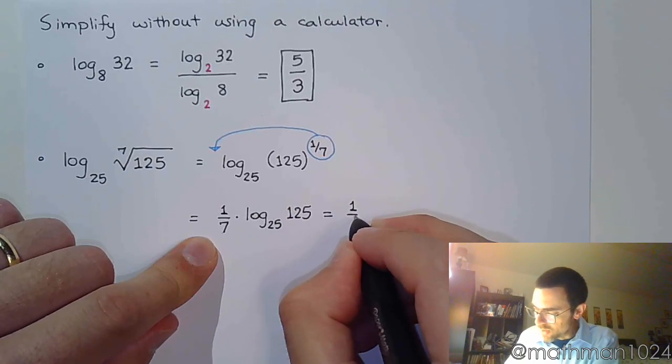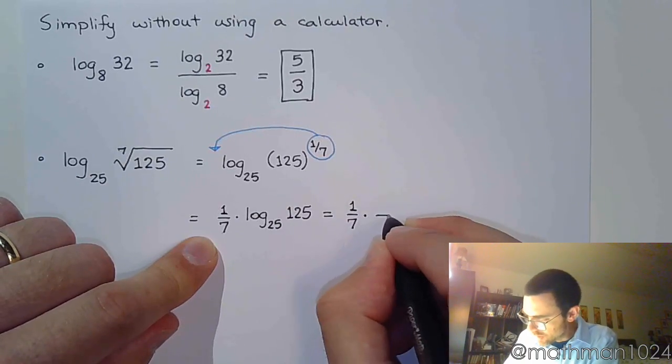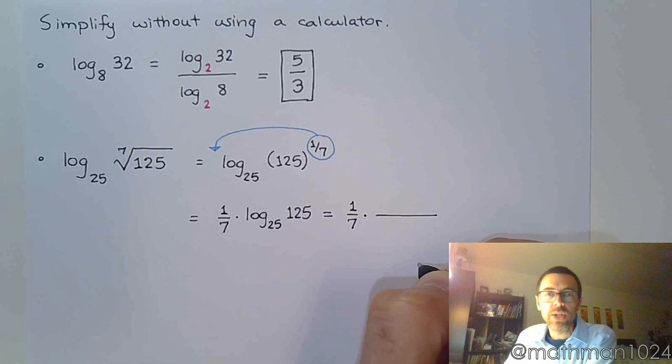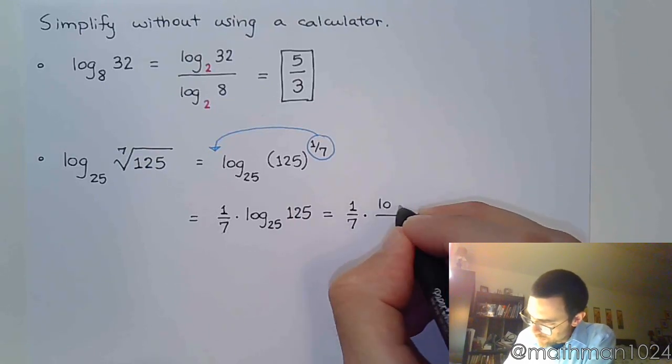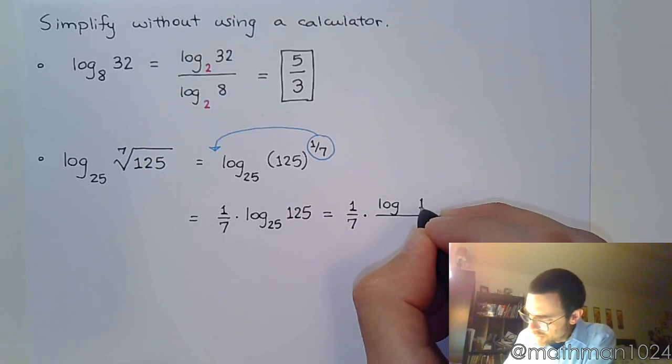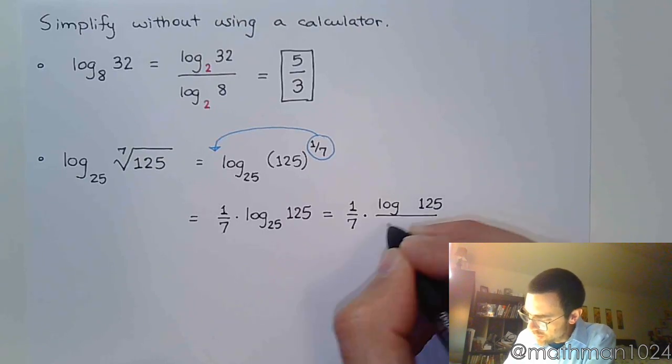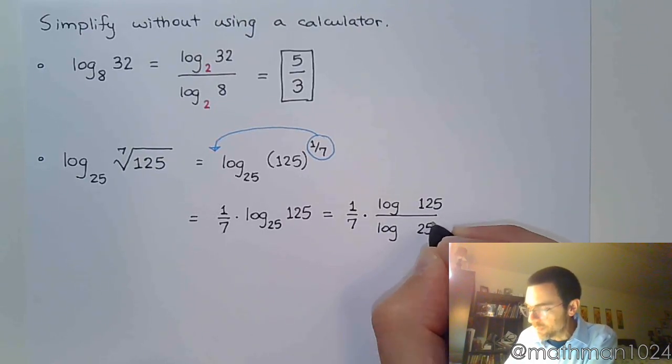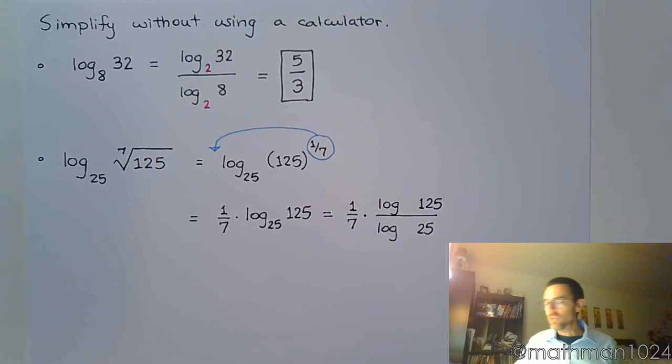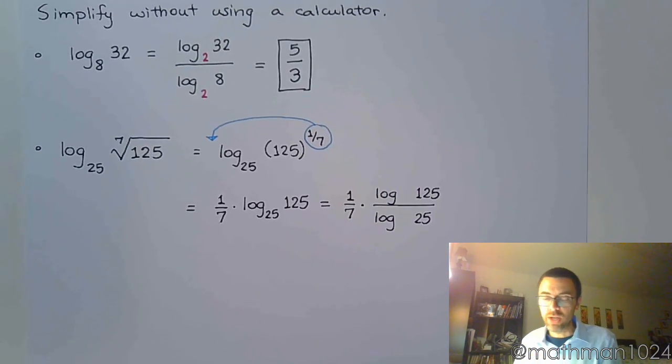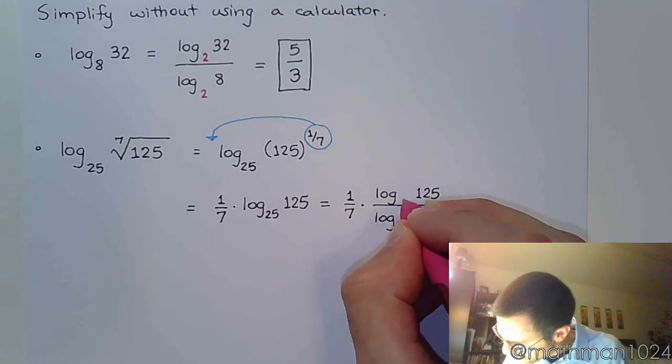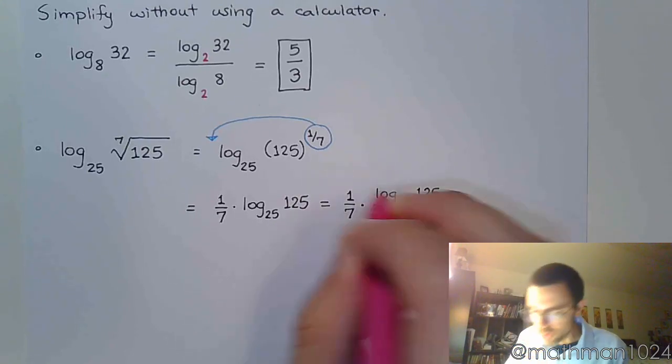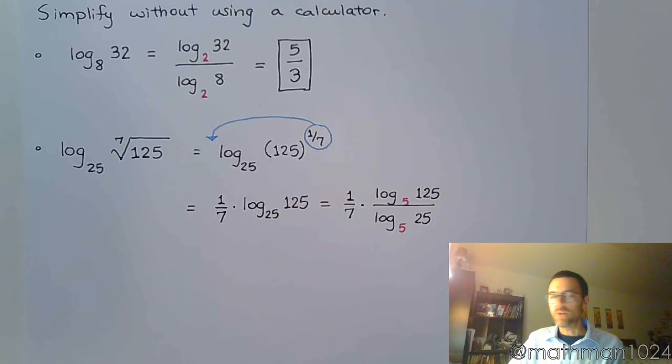So the 1 over 7 is still here in front. Times, and now we do our change of base. See, I like to start by saying log of 125 over log of 25. Now, if I were using a graphing calculator, I could just type this in and be done. But I'm doing this without a calculator. And I'm going to show you that the common base is 5. And by putting that here, it makes very quick work of this problem.